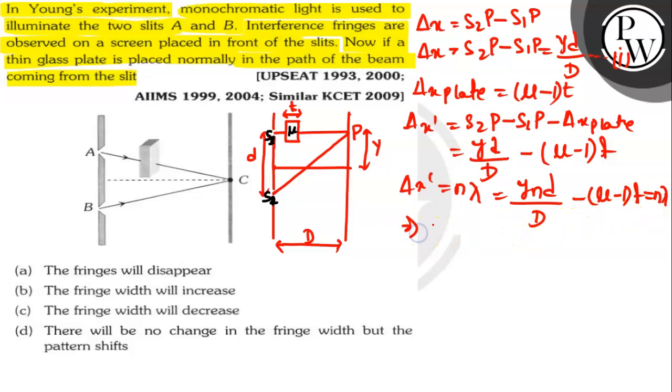Here yN equals capital D by small d into the bracket mu minus 1 into t plus N lambda.